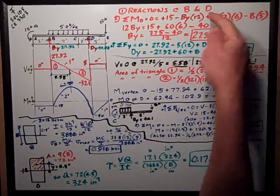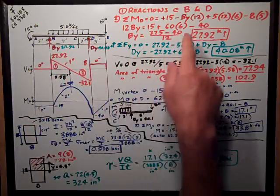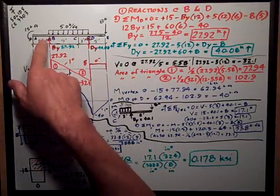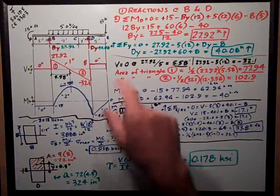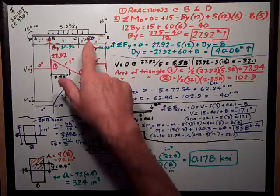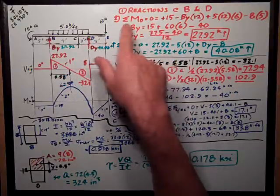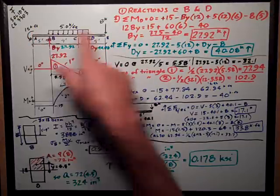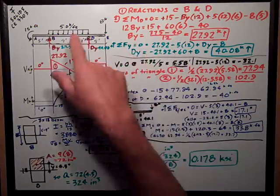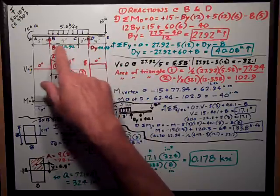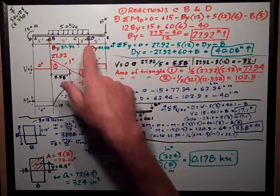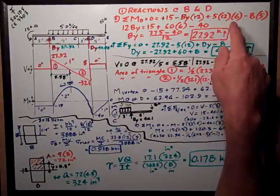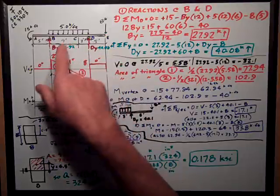So the first thing to do is solve for the reactions at B and D. By inspection, there is no horizontal load, so there's no reaction at this pin. This is a pin at B, and it's a roller at D. Let's sum moments about point D first, and that's equal to 0. We've seen counterclockwise positive. So I have a counterclockwise positive 15 kip foot at this end minus BY times its 12 foot distance to point D.